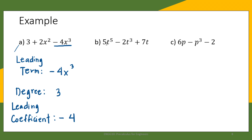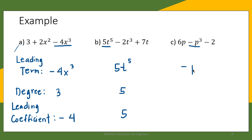For part b — 5t raised to 5 minus 2t cubed plus 7t — the term with the highest exponent is 5t raised to 5. So the leading term is 5t raised to 5, the degree is 5, and the leading coefficient is also 5. For part c — 6p minus p cubed minus 2 — the term with the highest exponent is negative p cubed, so the leading term is negative p cubed, the degree is 3, and the leading coefficient is negative 1.